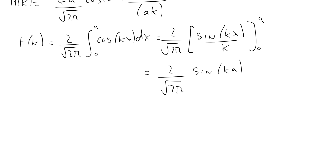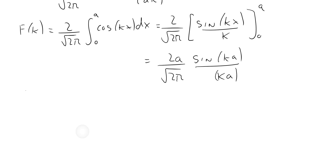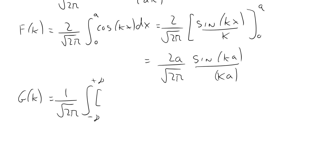Now we need to find g(k), the Fourier transform of the two delta functions. We write it as 1 over the square root of 2π, integrated from minus infinity to plus infinity, with a delta function at x = minus d and a delta function at x = d, multiplied by the complex exponential term e to the minus ikx.